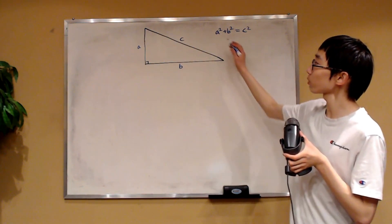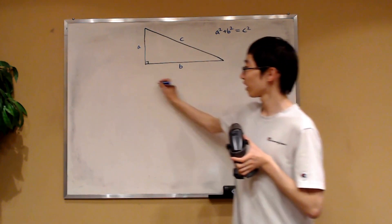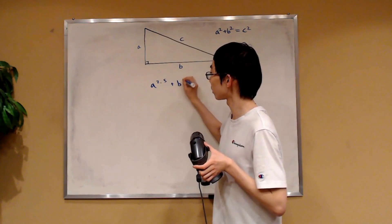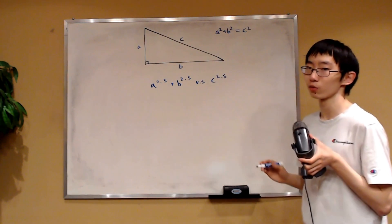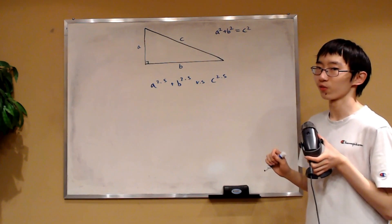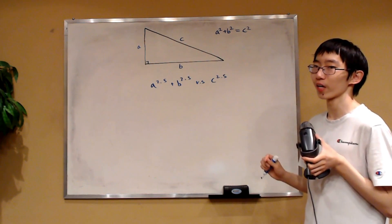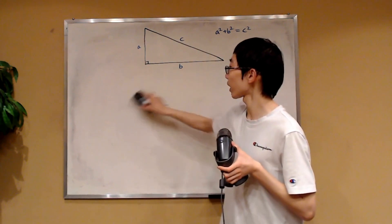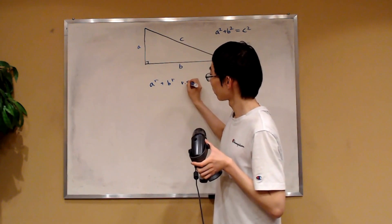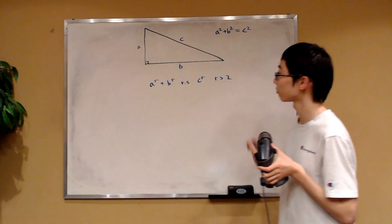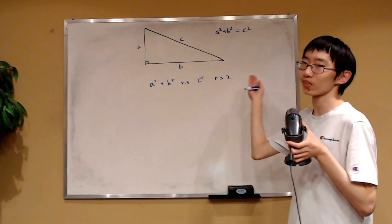In a right triangle, we know that a squared plus b squared is equal to c squared. However, have you ever wondered which one would be greater: a to the 2.5 plus b to the 2.5, or c to the 2.5? Which one of these two quantities would be greater? And if we had an exponent of 100 instead of 2.5, then which one would be greater? In this video, we're going to answer that question more generally — which one is greater: a to the r plus b to the r, or c to the r, for r greater than 2? Note that r can be any real number greater than 2.